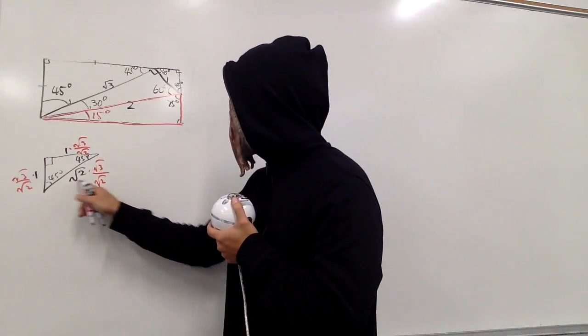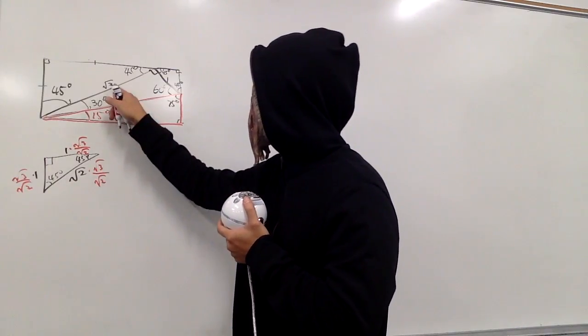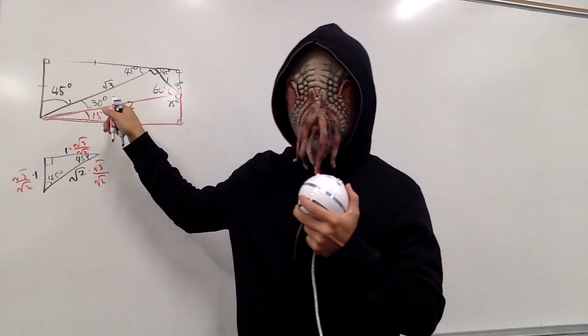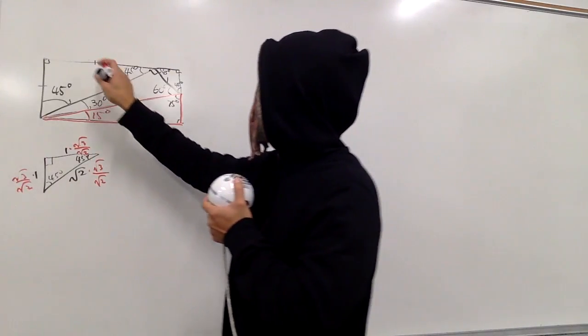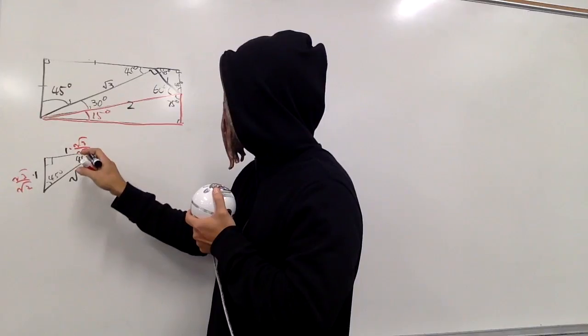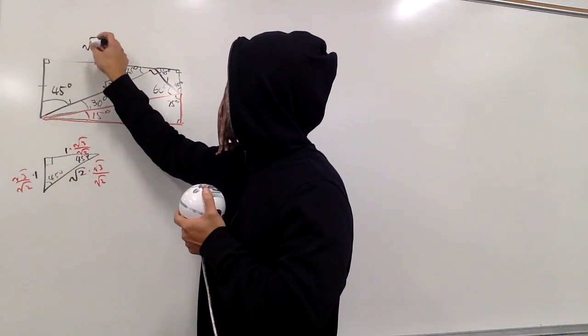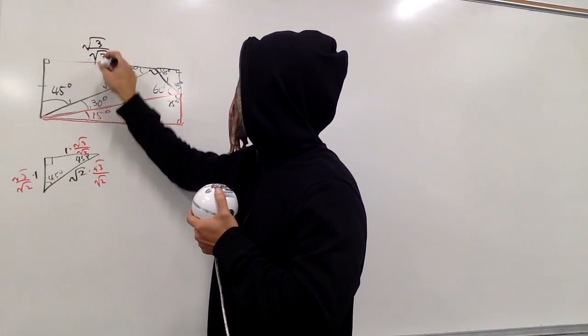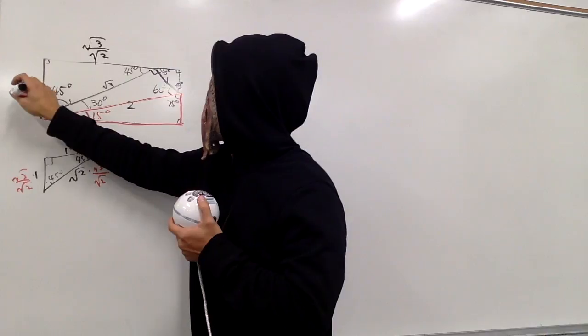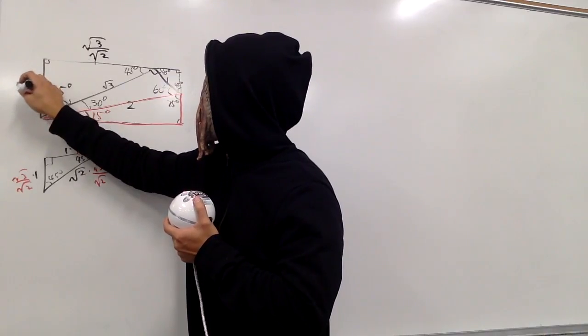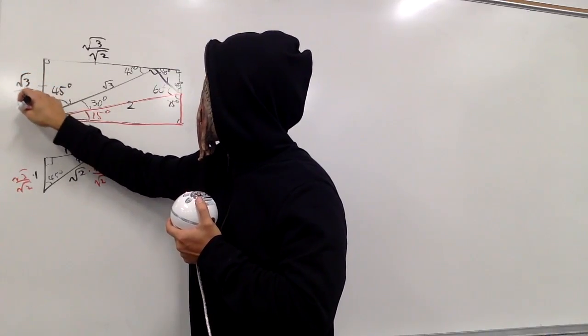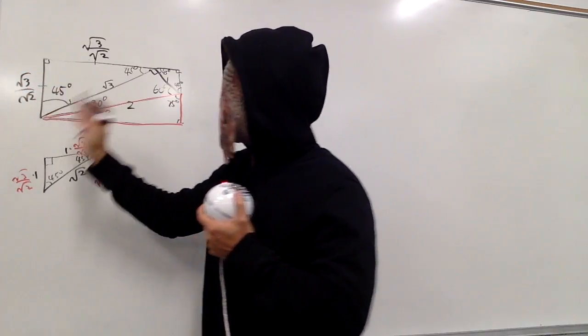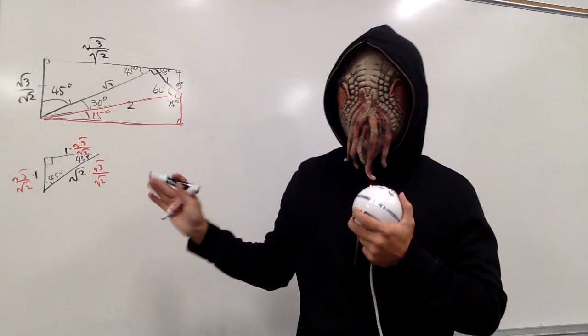So this and that will cancel, and that's how we get square root of 3. This right here has to be square root of 3 over square root of 2, and likewise this right here has to be square root of 3 over square root of 2 as well.